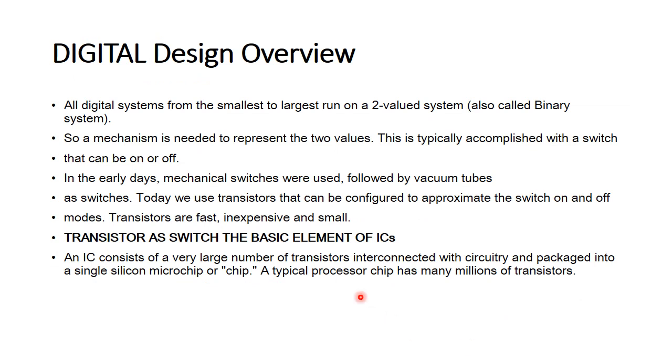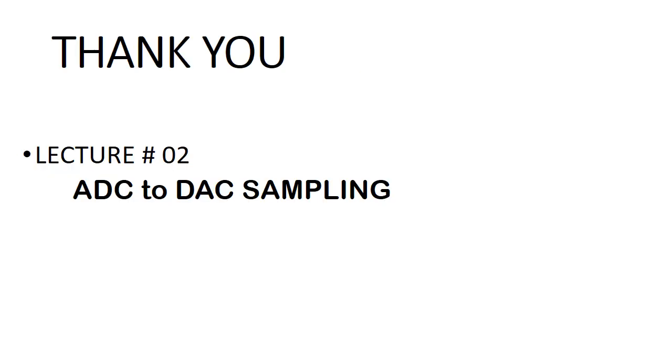Digital design overview. How can we design a digital system? A mechanism is needed to represent the two values. That is typically accomplished with a switch that can be on or off. Basically, a switch is a transistor. A transistor is an integrated circuit. An IC consists of a very large number of transistors interconnected with circuitry and packaged into a single silicon microchip. A typical processor chip has millions of transistors. Thank you so very much and looking forward to the next lecture. The topic of the next lecture is ADC, analog to digital converter, to DAC, digital to analog converter, sampling.